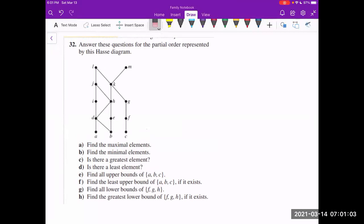The first thing it's asking us to do is find all the maximal elements. So remember, maximal elements are going to be elements that have no elements that are greater than them. And in this case, we could say that L and M have no elements that are greater than them. So those are going to be our maximal elements.